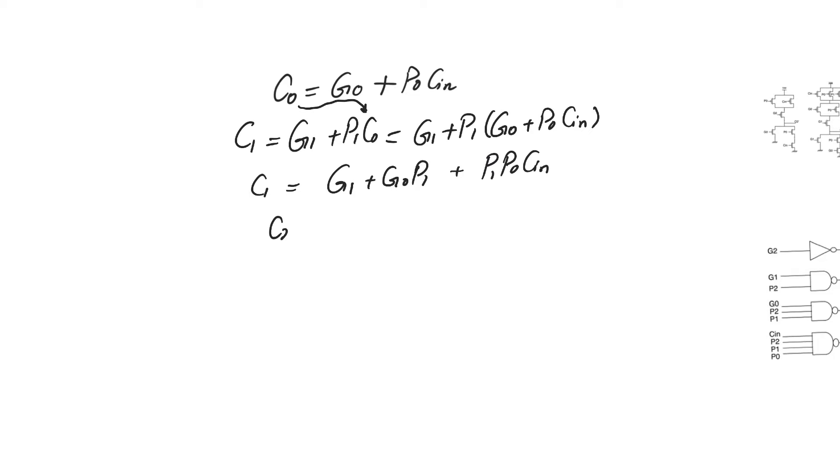If we write down the expression of C2, which is equal to G2 plus P2 into C1, then substitute for the expression of C1 we obtained above, we obtain G2 plus P2 G1 plus P2 P1 G0 plus P2 P1 P0 times Cin.